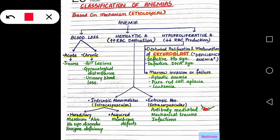Now we come to the classification of anemias. First, classification based on mechanism, also called etiological classification. Anemia can be divided into blood loss anemia, hemolytic anemia, and hyperproliferative anemia. Blood loss anemia may be acute or chronic. Acute causes may be trauma due to accident or surgical procedures. Chronic loss of blood may be due to GI lesions such as peptic ulcers, gynecological disturbances with excessive blood loss, or urinary blood loss.